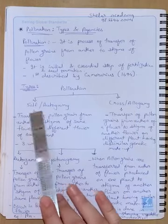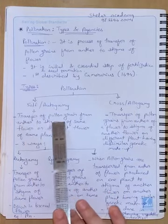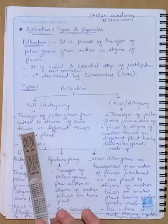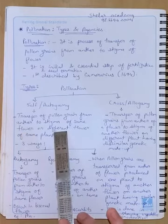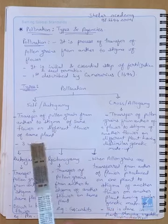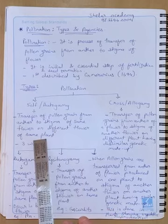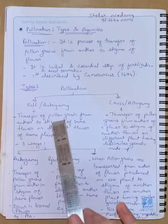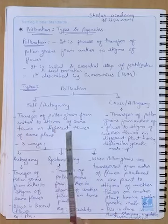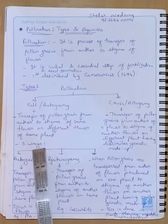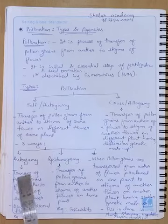Self-pollination is basically the transfer of pollen grains from the anther to the stigma of the same flower. Another possibility is that pollen is transferred to a different flower but of the same plant. So both points are included in the definition, giving us three ways of self-pollination.